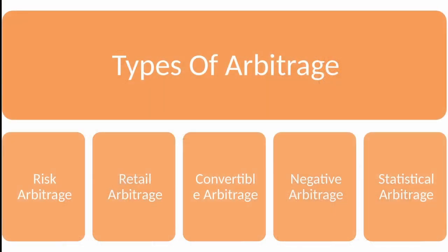What are the types of arbitrage? There are 5 types. First is risk arbitrage, also known as merger arbitrage. It is a popular strategy among hedge funds, which buy the target stocks and short sell the stocks of the acquirer. Second is retail arbitrage. Just like in financial markets, arbitrage also takes place in retail markets, and that is known as retail arbitrage.